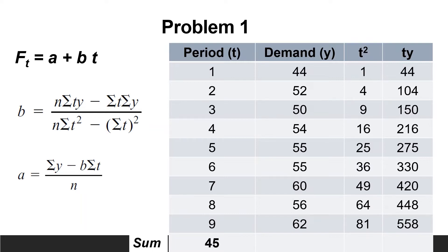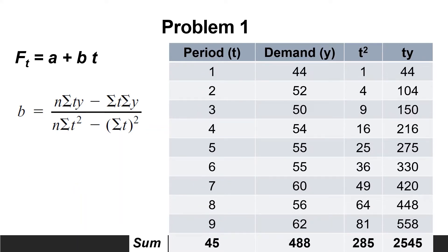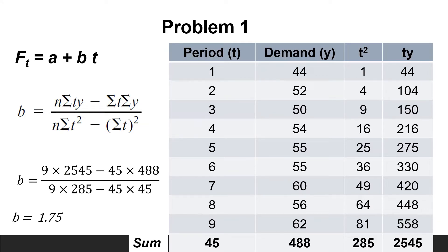Calculation of sigma t results in 45. Sigma y is 488. Sigma t squared is 285, and sigma t multiplied by y is 2545. We know that n is the number of periods; in the current problem it is 9. Substitute in the equation of b: b equals 9 multiplied by 2545 minus 45 multiplied by 488, all divided by 9 multiplied by 285 minus 45 multiplied by 45, equal 1.75.